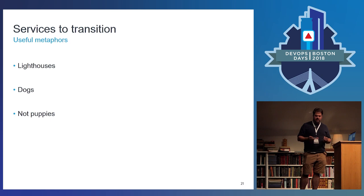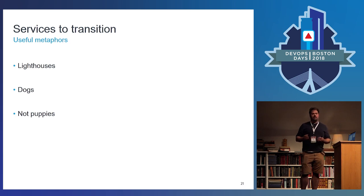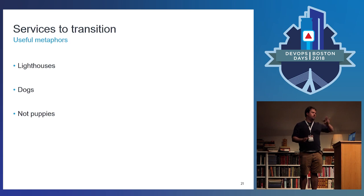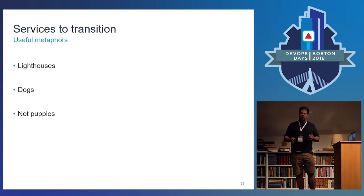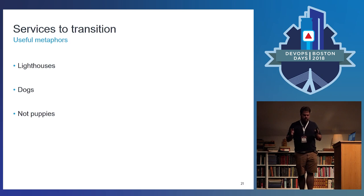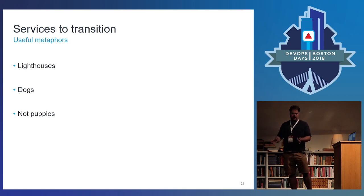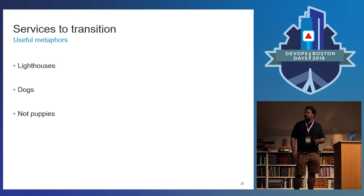There are a couple different patterns of services I'd like to talk about. Lighthouses — an analogy I like to use where you've got a product that's super critical, needs to run every night, and if it doesn't run it's pretty bad, but luckily it's very well automated and a simple system so there's not a lot that can go wrong. These things are critical and simple. This is a great service to transition — you hand it to an engineering team with documentation and you're off to the races.